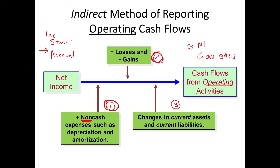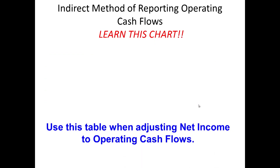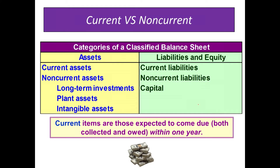We are going to analyze our change in current assets and our changes in current liabilities — that's the third thing we have to do. Current assets or current items are those expected to come due, both collected and owed, within one year. On your balance sheet, you usually have a separate classification for current assets versus non-current assets, and current liabilities versus non-current liabilities.